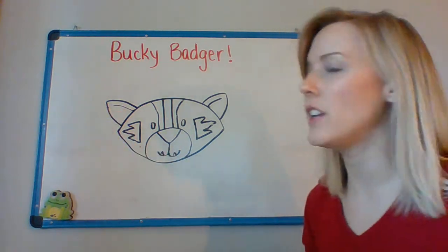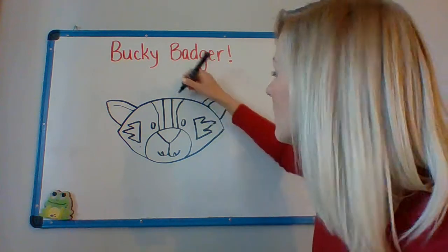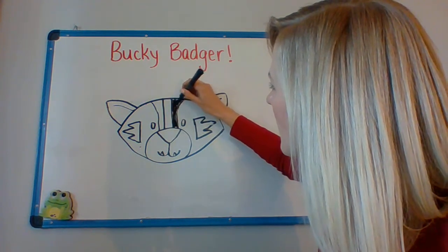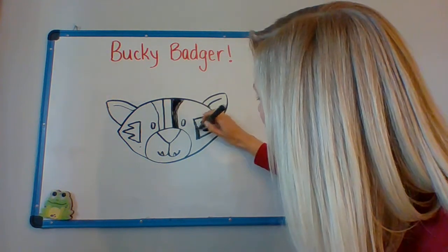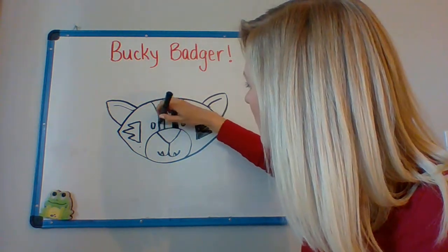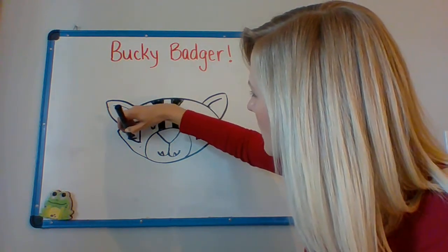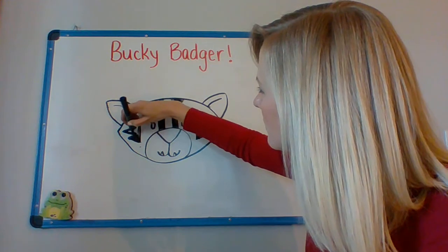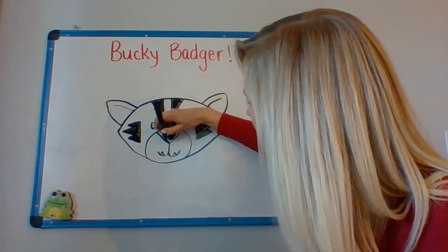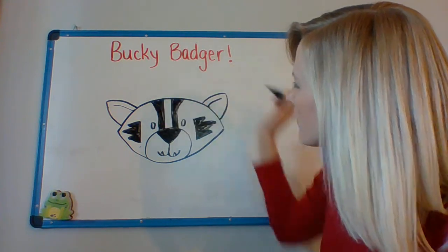Now, you can finish your Bucky right how it is, just like this, or you can add some more details. You can color in some of the parts black. So Bucky has this part colored in black on this side, and his stripe over here you can color in black. This stripe I can color in, I can color in this one, I can color in his nose.